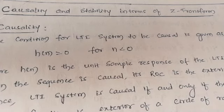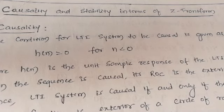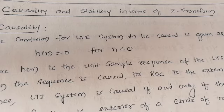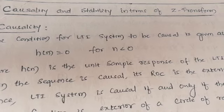In this video we will discuss causality and stability of the Z-transform. A system is said to be causal and stable — we already know these two properties from earlier, and now we are going to express and discuss them in terms of the Z-transform.